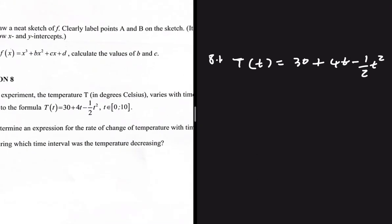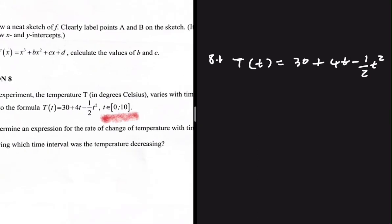Determine an expression for the rate of change of temperature with time. What are we given? We are given an equation for the temperature in degrees Celsius when it varies with time. So we have T, the temperature, depending on t, the time, being equal to 30 plus 4t minus one-half t squared. We are told that t should lie between 0 and 10, with both included.